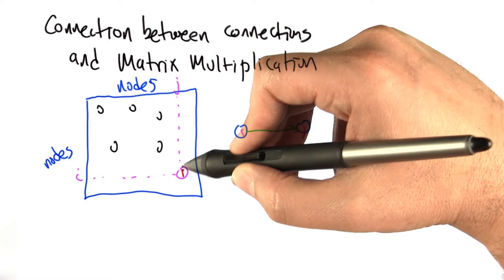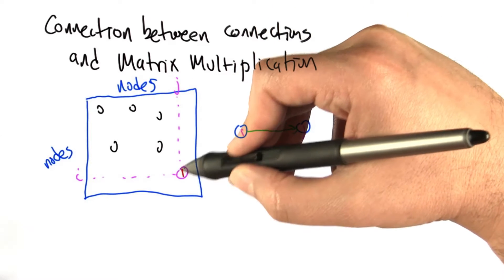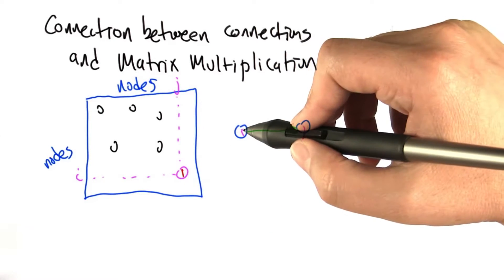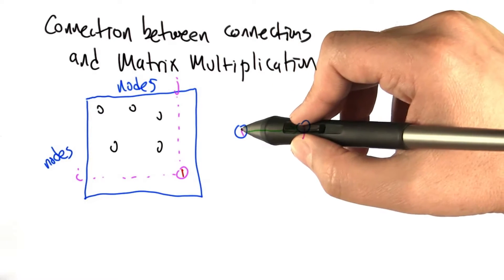If there's a link between node i and node j, then the corresponding position in the matrix has a number 1. That 1 there means that there's a link from i to j.